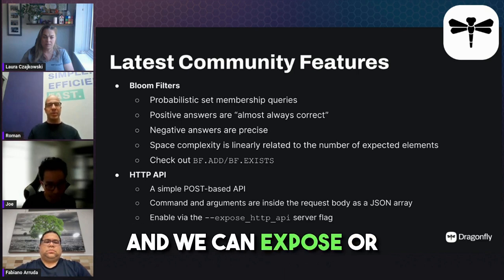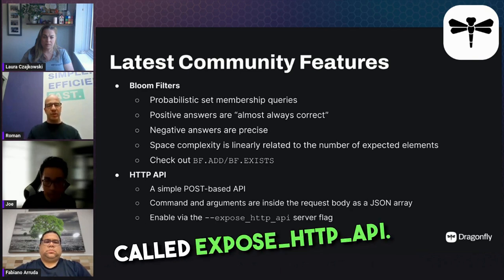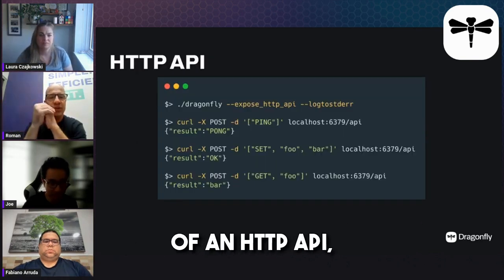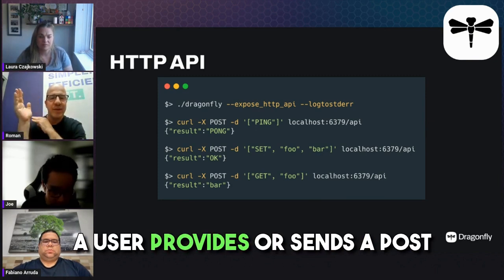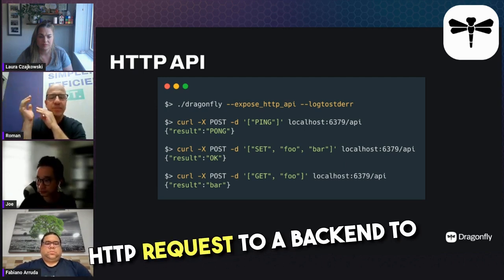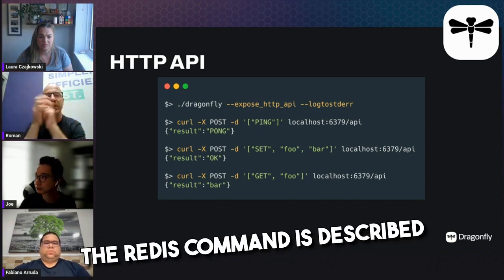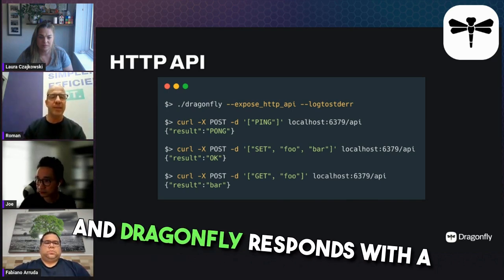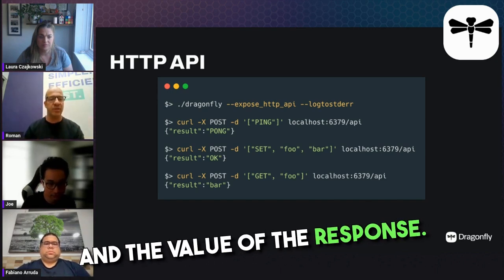We can expose or enable this API via a special flag called 'expose HTTP API'. Here we have an example — it's really straightforward. A user sends a POST HTTP request to Dragonfly where the Redis command is described as a JSON array, and Dragonfly responds with a JSON response containing the result and value.